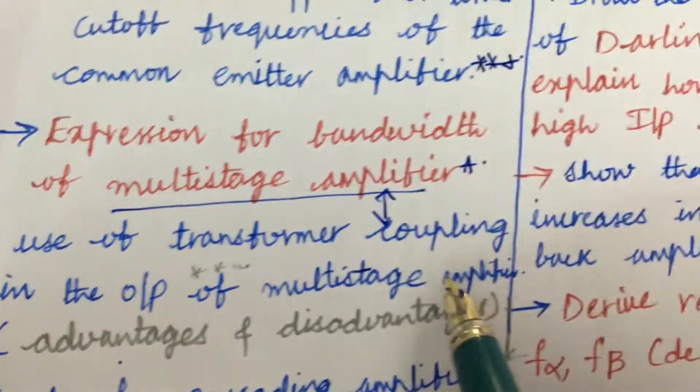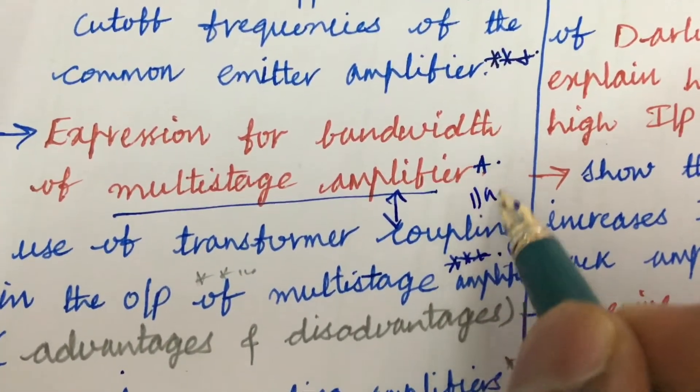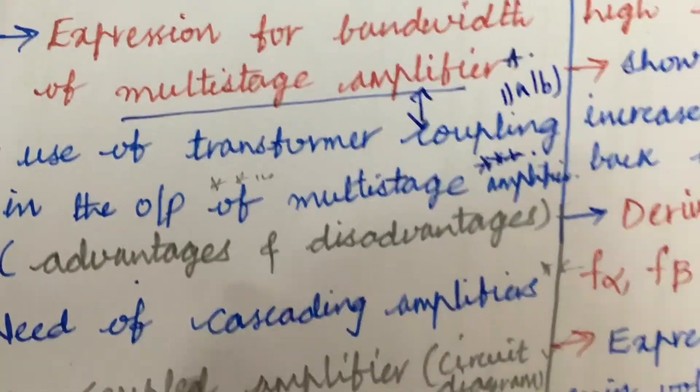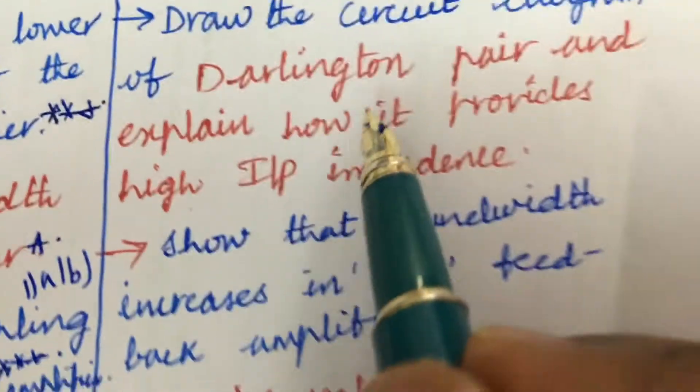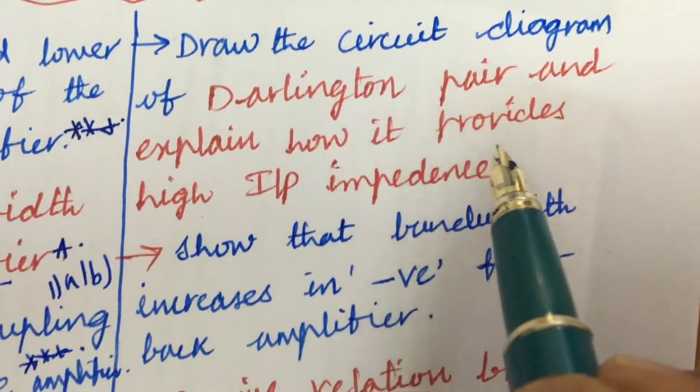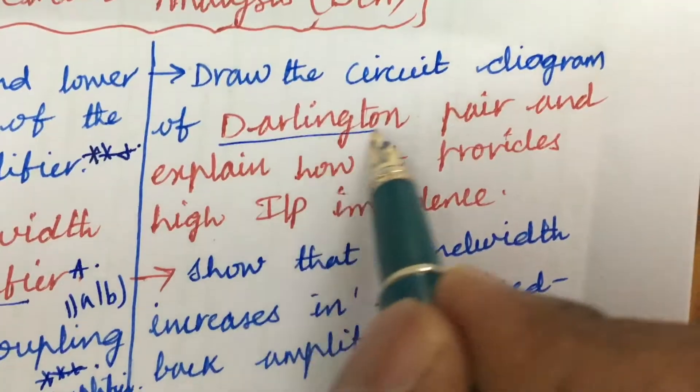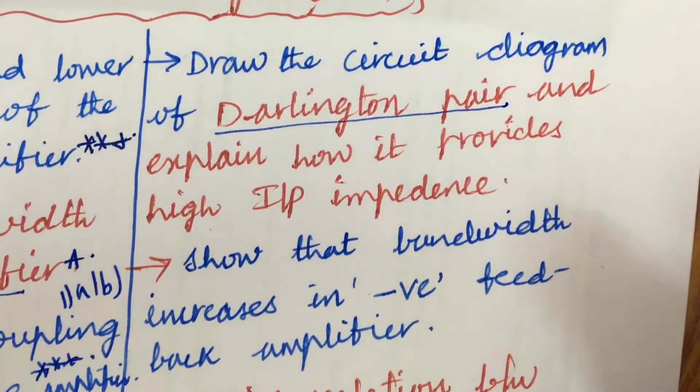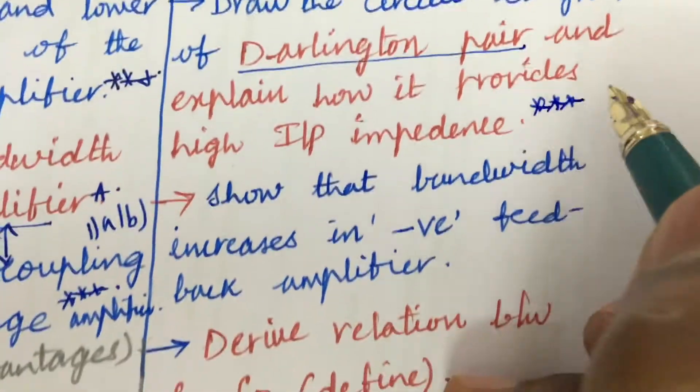Related to these questions, you are going to get one question for sure, and I can give you an assurance that may be 1a as well as 1b. Need of cascading amplifiers. Draw the circuit diagram of a Darlington pair and explain how it provides high input impedance. Related to Darlington pair, you may be getting a problem as well as the derivation. This may be also one of the very important and gunshot questions.